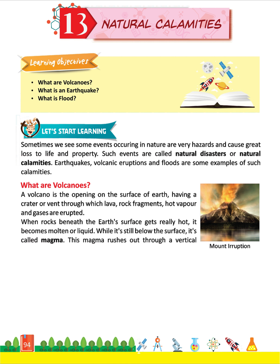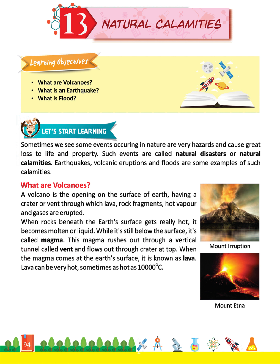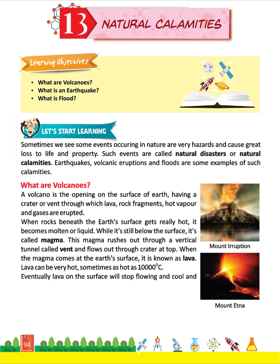This magma rushes out through a vertical tunnel called a vent and flows out through the crater at the top. When the magma comes to the earth's surface, it is known as lava. Lava can be very hot — sometimes as hot as 10,000 degrees Celsius. Eventually, lava on the surface will stop flowing and cool and harden into rocks.